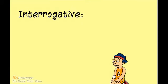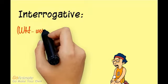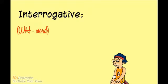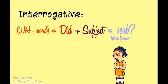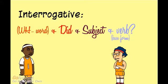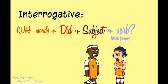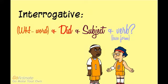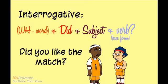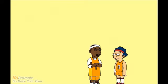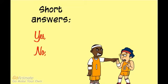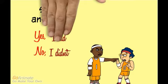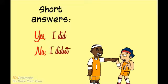We didn't win the match. In interrogative, a question word first if required, then the auxiliary did, the subject, and the verb in base form. Did you like the match? No, I didn't. For short answers we use yes or no, followed by the subject and the auxiliary did.